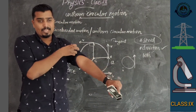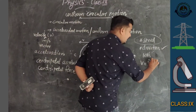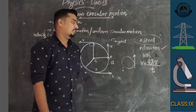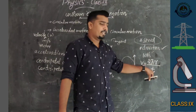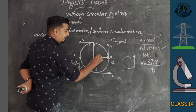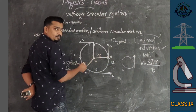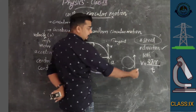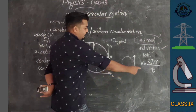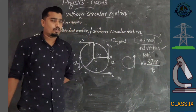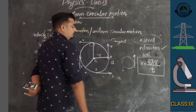The velocity of the body in uniform circular motion is given by V = 2πr/T, where r is the radius of the circular path, T is the time period, and 2π is a constant. This is the equation for velocity in uniform circular motion.